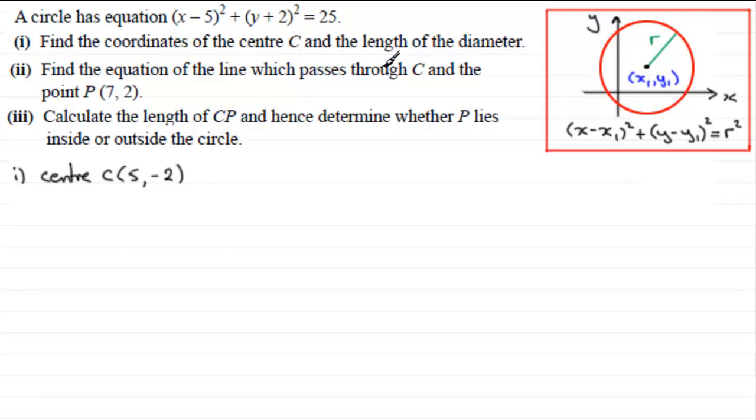Now we've got to work out the length of the diameter. So first of all, we've got to get the radius. We can see that r², the radius squared, is the number on the end here. So the radius squared is equal to 25, so the radius must be equal to the square root of 25, and it won't be plus or minus because we're looking at a positive length. So that's going to be 5. And therefore, the diameter has got to be twice that, so diameter equals 10. So that's part one.